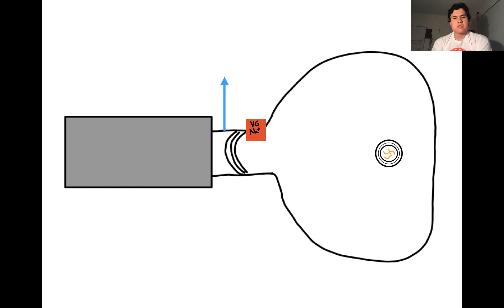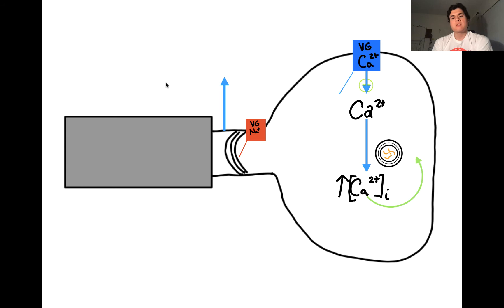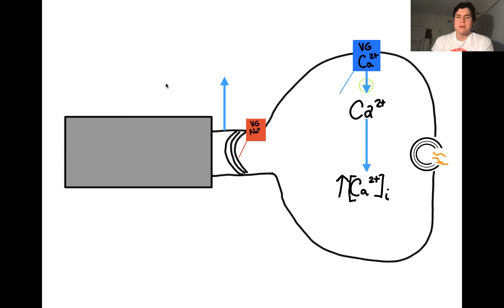As action potentials propagate down the axon, voltage-gated sodium channels open, allowing sodium to flow into the cell, which will depolarize the synaptic terminal, which will therefore open voltage-gated calcium channels, increasing the intracellular calcium level, which will therefore facilitate the fusion of the vesicle with the presynaptic membrane, allowing the release of neurotransmitters into the synapse. The neurotransmitter we're going to be focusing on today is glutamate.